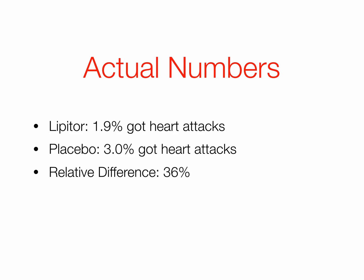But that's the relative difference. The absolute difference, when you subtract 1.9 from 3.0, is 1.1%. So if the absolute difference is 1.1%, that means if there are 100 people in one group and 100 people in another group, and one group is taking Lipitor and the other is not, about one person out of that 100 will be helped.